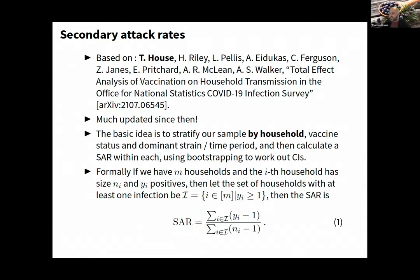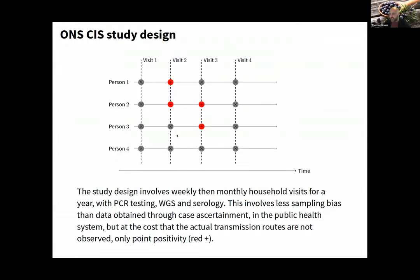I'll say a quick thing about crude secondary attack rates. You can calculate those here. The crude secondary attack rate would be two-thirds in this picture. There's one primary case—we don't know which one but that doesn't matter. There are three people who could have been secondary cases, and two are secondary cases.